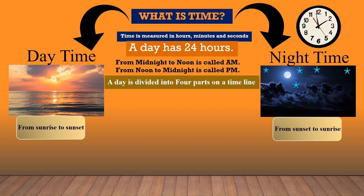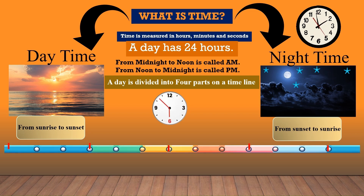A day is divided into four parts on a timeline. A timeline is like a number line, but here we are dividing it into four parts. See the clock needles — they are moving in a clockwise direction. For young learners and beginners we divide it like this: 6 to 12 we say morning time, after the sun rises and you wake up. Afternoon is 12 PM to 4 PM, after lunch. Evening is 4 PM to 8 PM, when the sun starts setting. Night is after bedtime.